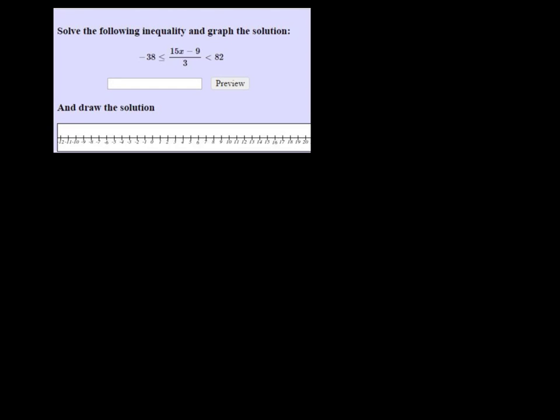Alright, we're trying to solve this inequality and then graph it. So I want to get rid of this fraction. I'm going to multiply both sides by 3. So negative 38 times 3 is negative 114.